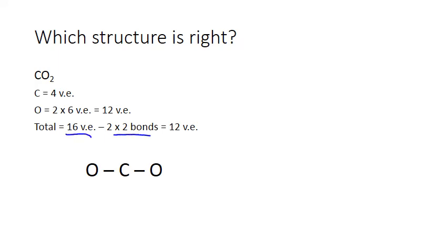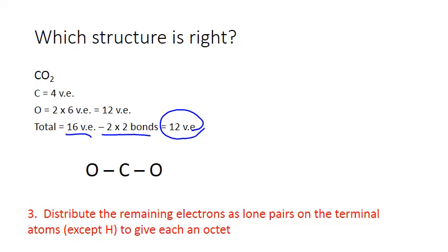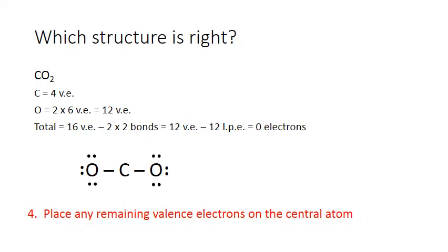We subtract out those bonding electrons — two bonds with two electrons each — and we are left with 12 valence electrons to place. We'll put them around our terminal atoms, the oxygens: 2, 4, 6, 8, 10, 12. This leaves us with zero electrons remaining, so the fourth step is not necessary — we have no electrons left to place on the central atom.